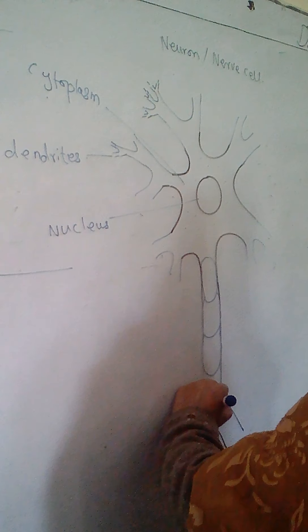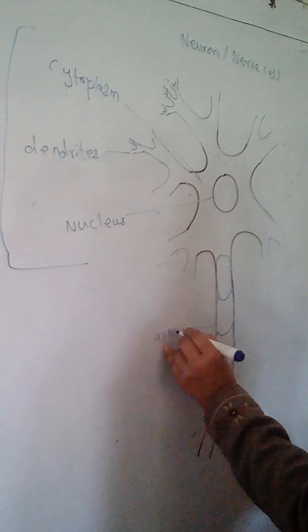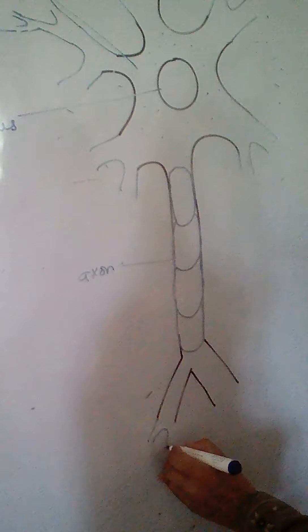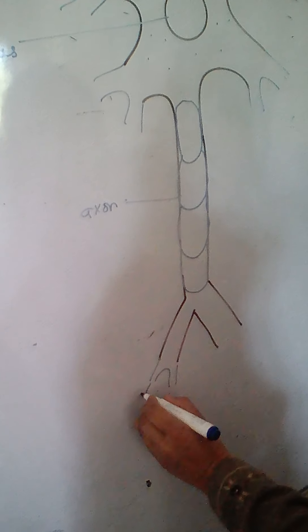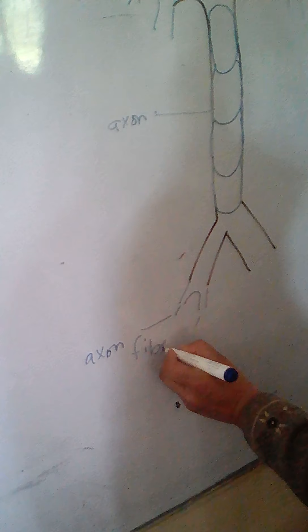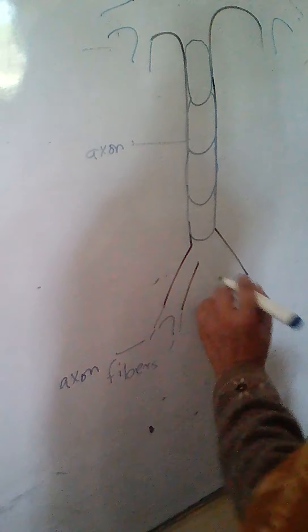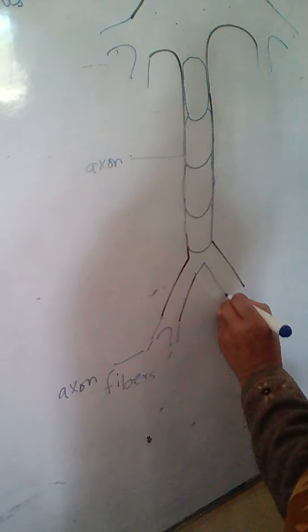So it is long, this is called axon. And the ends are called axon fibers. These are called axon fibers. On this place also there are axon fibers.